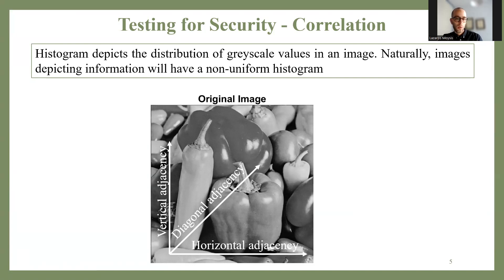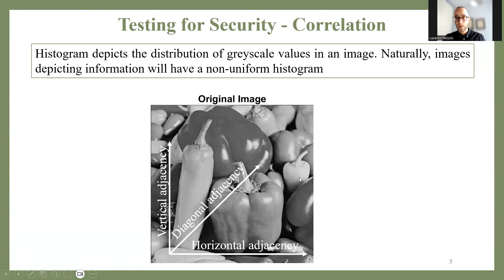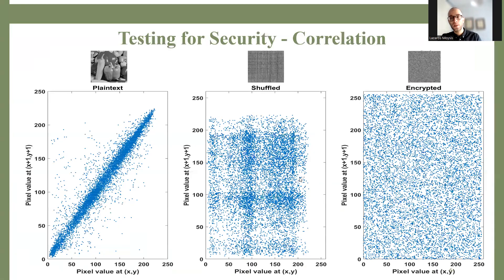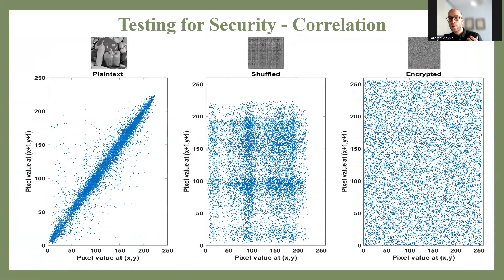That's what happens naturally in an original image. We usually test this for vertical adjacent pixels, horizontal adjacent pixels, and diagonal adjacent pixels. Some recent papers also test it for anti-diagonal pixels. In a plain text image, correlation is high, but ideally, after we encrypt the image, since adjacent pixels should have no relation to each other — encryption must hide any previous relation they had — the correlation should be very close to zero.